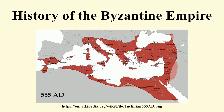In 551, a noble of Visigothic Hispania, Athanagild, sought Justinian's help in a rebellion against the king, and the emperor dispatched a force under Liberius, who, although elderly, proved himself a successful military commander. The Byzantine Empire held on to a small slice of the Spania coast until the reign of Heraclius. In the east, Roman-Persian wars continued until 561, when Justinian's and Khosrau's envoys agreed on a 50-year peace.